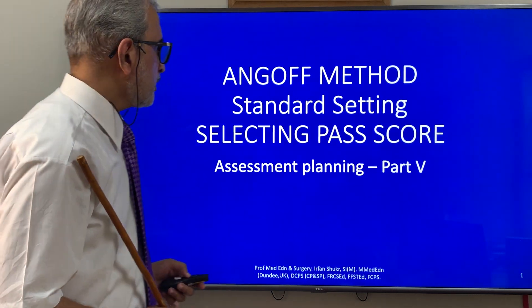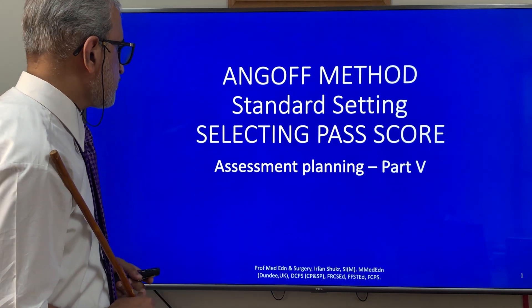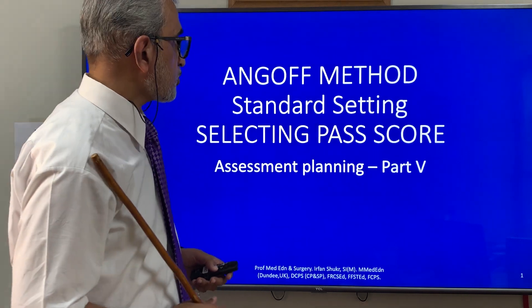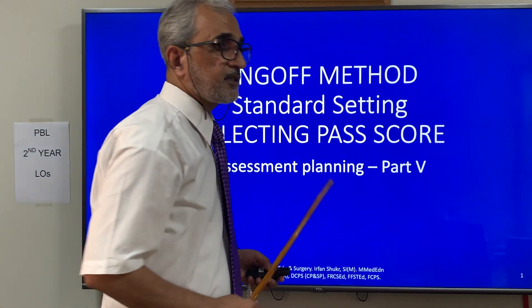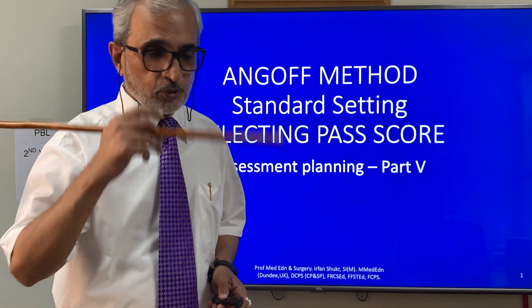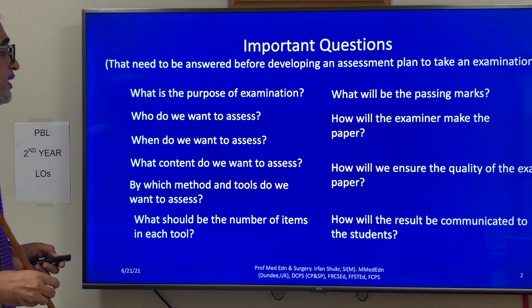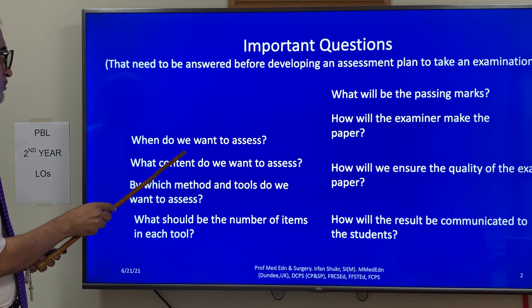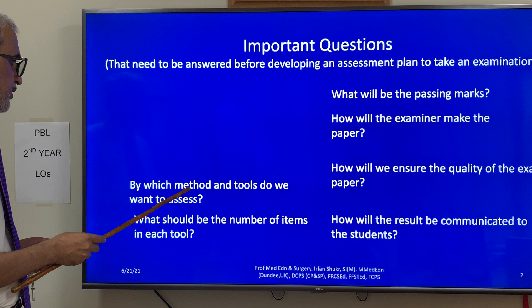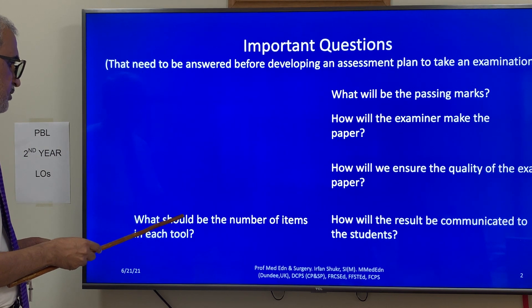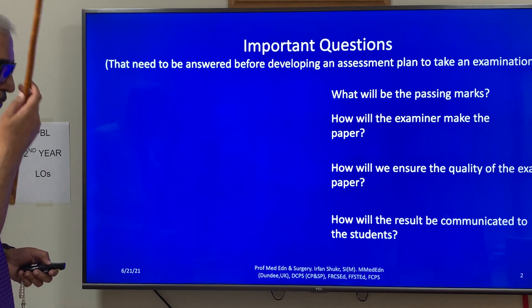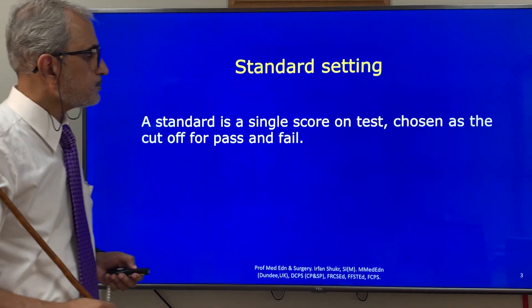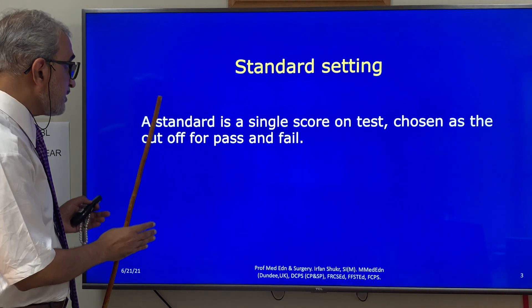Good morning, peace be upon you. This is Part 5 of the series on assessment planning. Today we are going to talk about standard setting — meaning selecting the pass score. We have already done the previous topics: purpose of examination, content with the table of specification, methods and items with the examination blueprint, and today we will discuss what the passing marks will be.